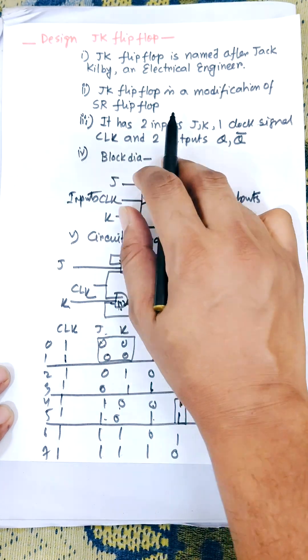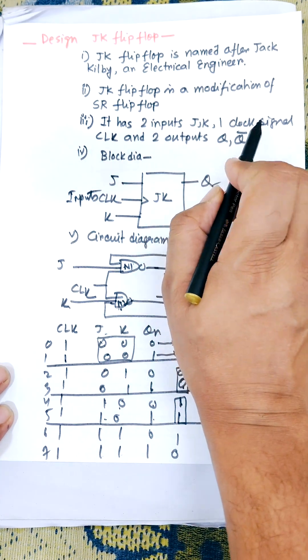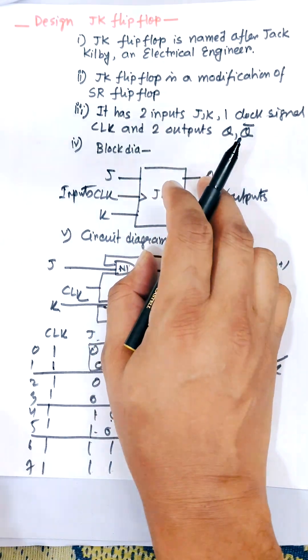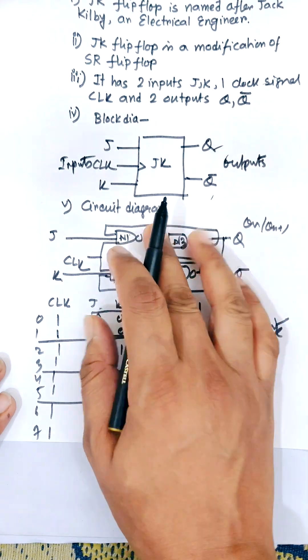It has two main inputs J and K and one clock input. So basically there are three inputs: J, K, and CLK, two outputs Q and Q-bar. This is the basic block diagram.